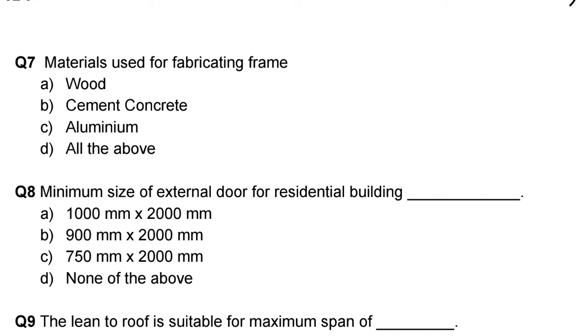Next question: material used for fabricating frame. Option A: wood, Option B: cement concrete, Option C: aluminium, Option D: all the above.